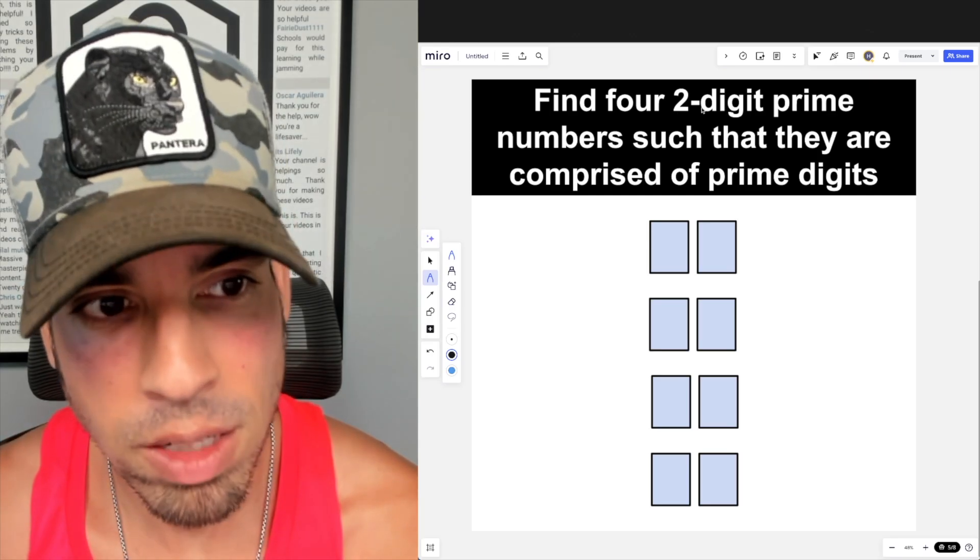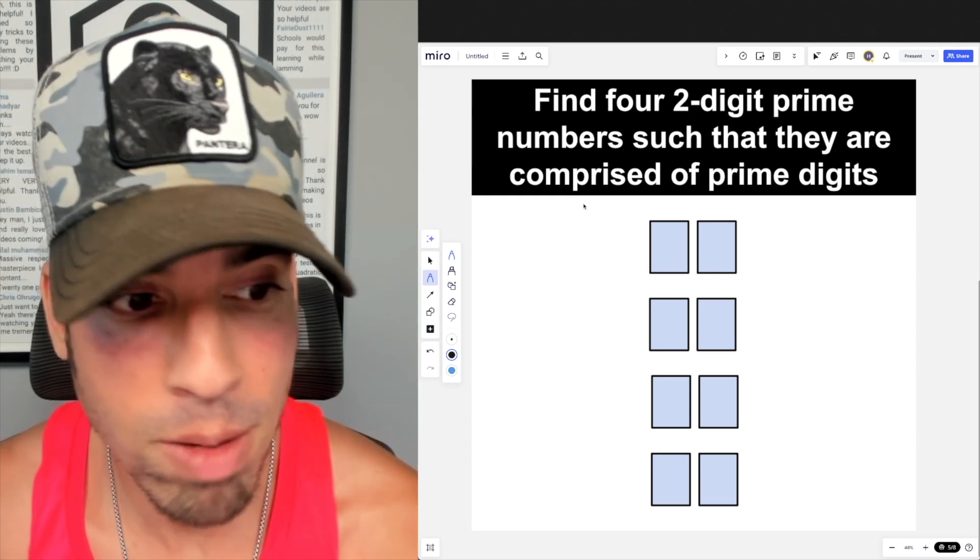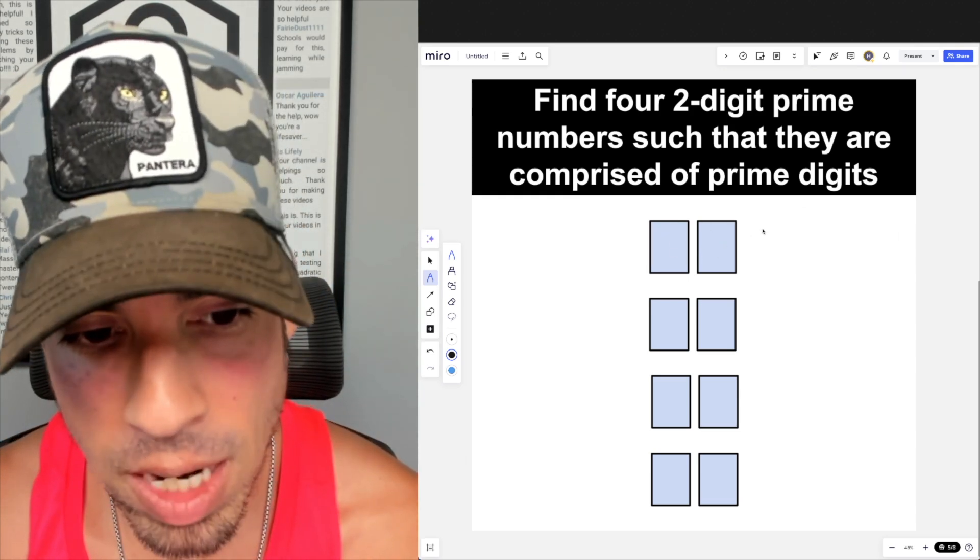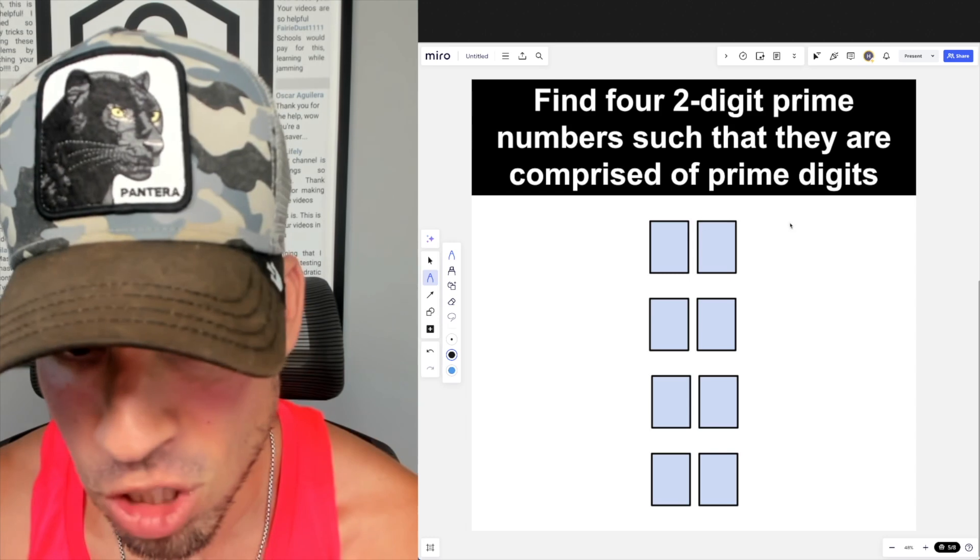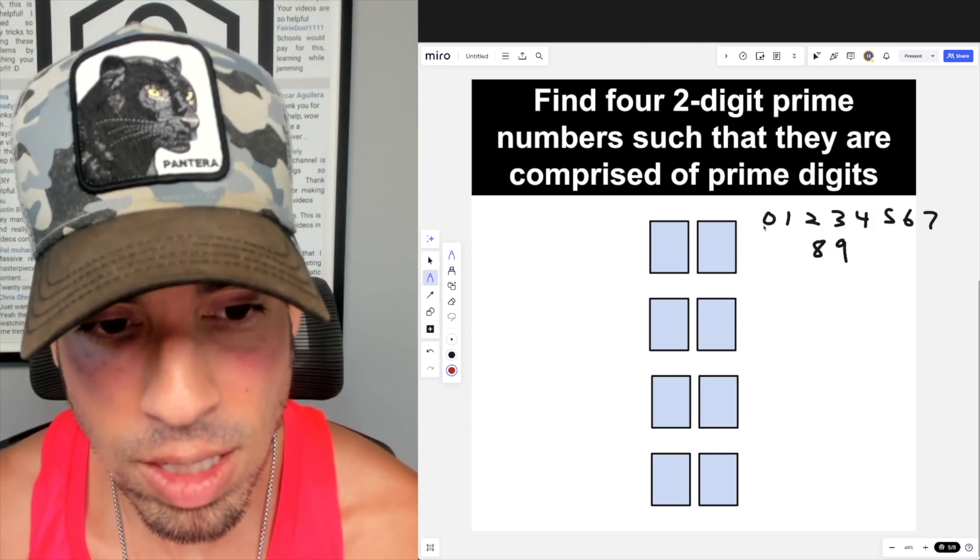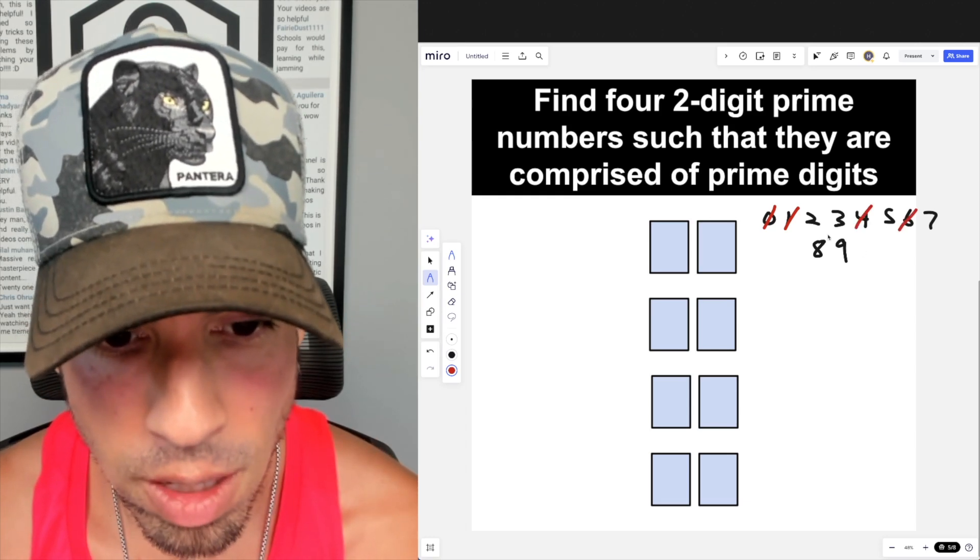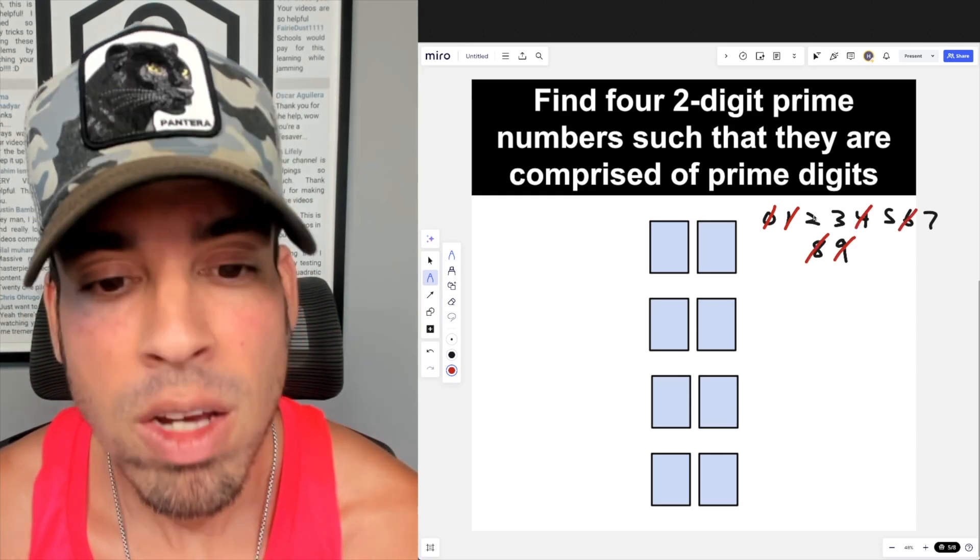Since we're finding four two-digit prime numbers and each of the digits must also be prime, we can start by eliminating some of these available digits. Let's write out all the possible digits and we are going to cancel everything that's not prime, which is zero, one, four, six, eight, and nine. Now these are the four available digits: two, three, five, and seven.